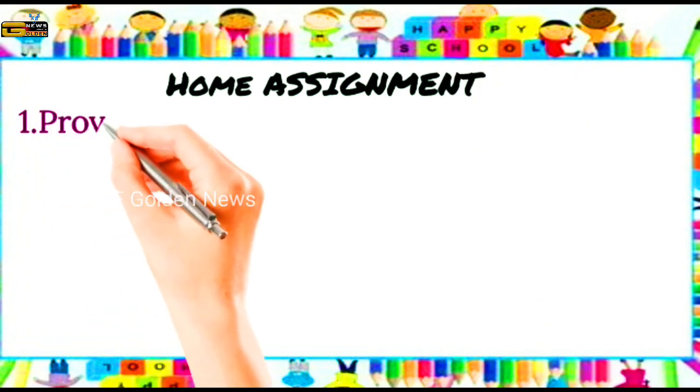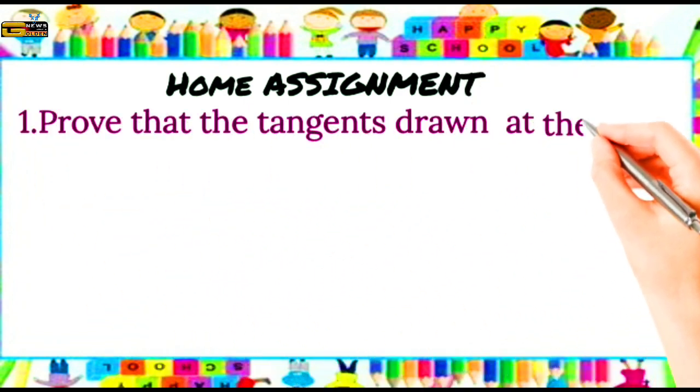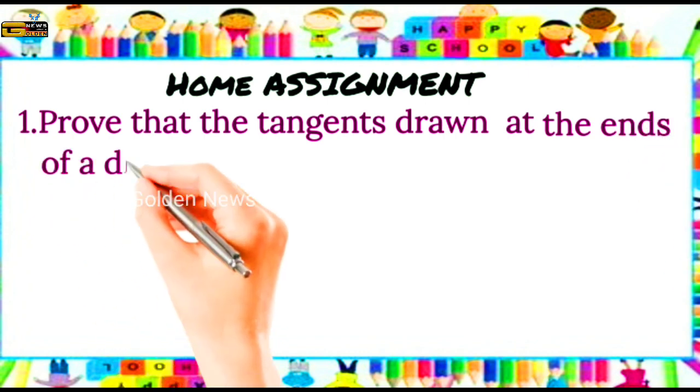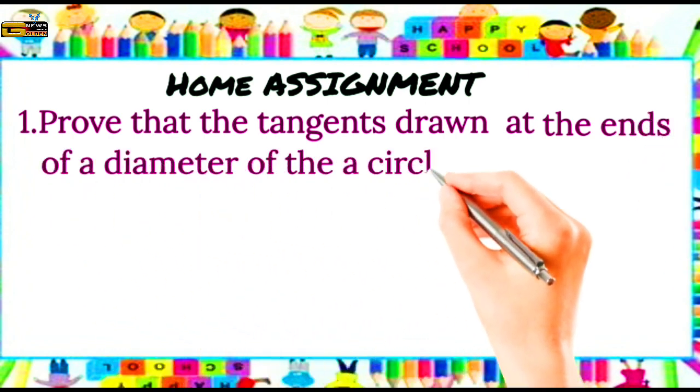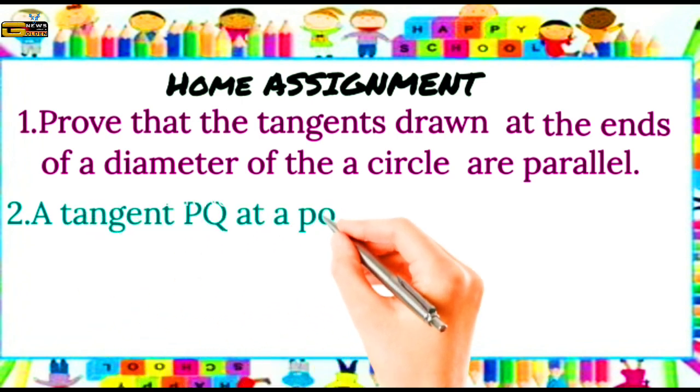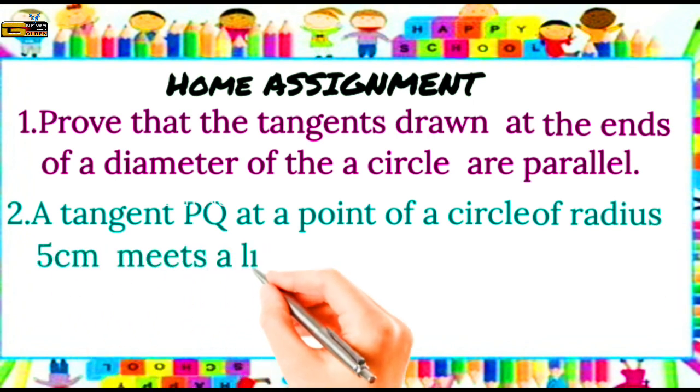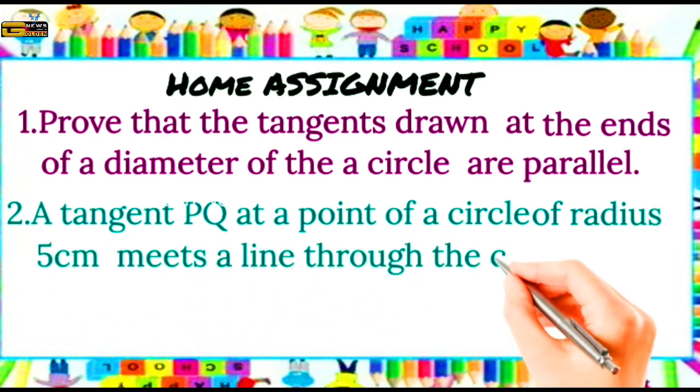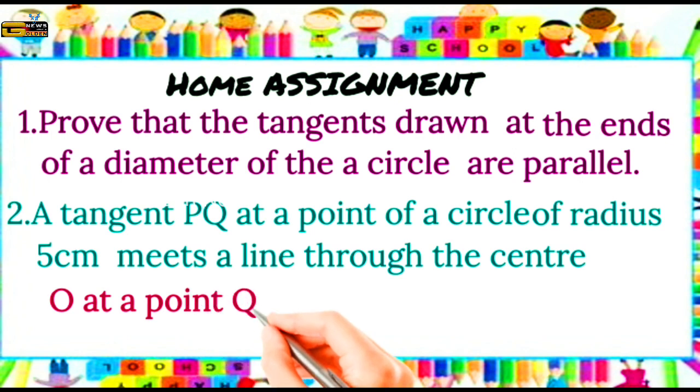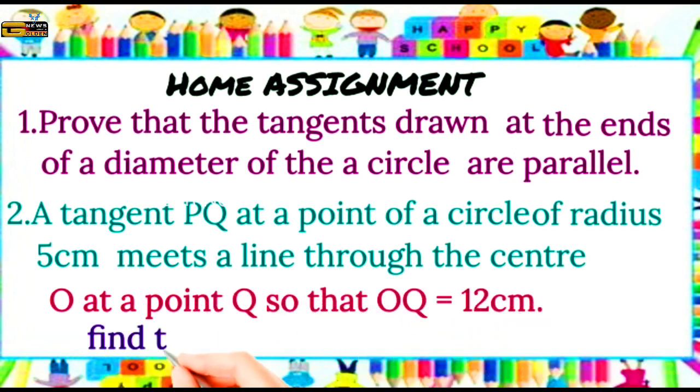Home assignments: Prove that the tangents drawn at the ends of a diameter of a circle are parallel. Second one: a tangent PQ at the point of a circle of radius 5 cm meets a line through the center O at a point Q so that OQ is equal to 12 cm. Find the length PQ.